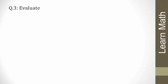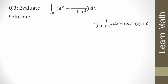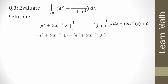The next question: evaluate the definite integral from 0 to 1 of (eˣ + 1/(1 + x²)) dx. Since the integration of 1/(1 + x²) = tan⁻¹x and the integration of eˣ = eˣ, we can write [eˣ + tan⁻¹x] from 0 to 1. Putting in limits: (e¹ + tan⁻¹1) − (e⁰ + tan⁻¹0) = (e + π/4) − (1 + 0) = e + π/4 − 1.